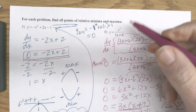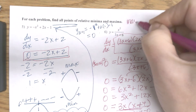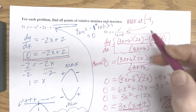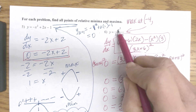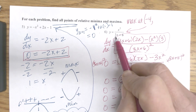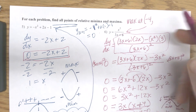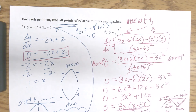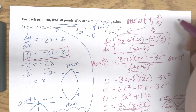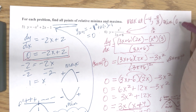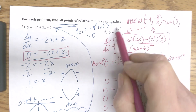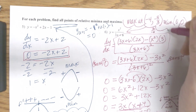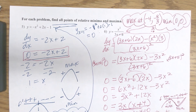Now I have to go back to find the actual points. I have a max at negative 4: plugging negative 4 into the original gives 16 over (negative 12 plus 6), which is 16 over negative 6, reducing to negative 8 thirds. And I have a min at 0: plugging 0 in gives 0 over 6, which is 0. So I have a max at (negative 4, negative 8/3) and a min at (0, 0).